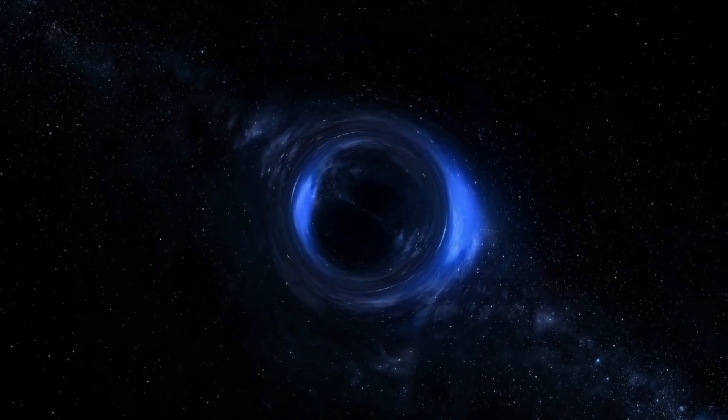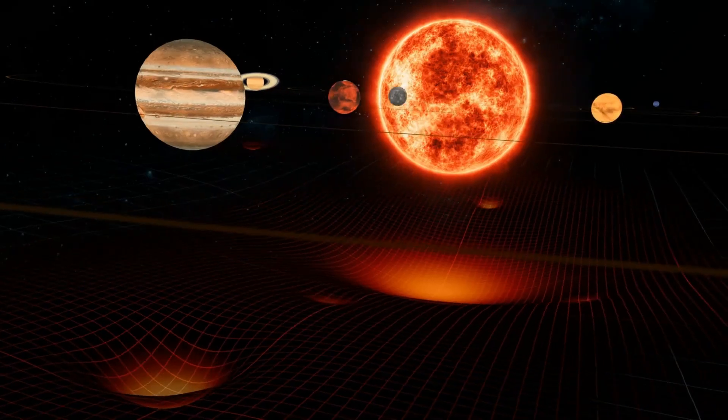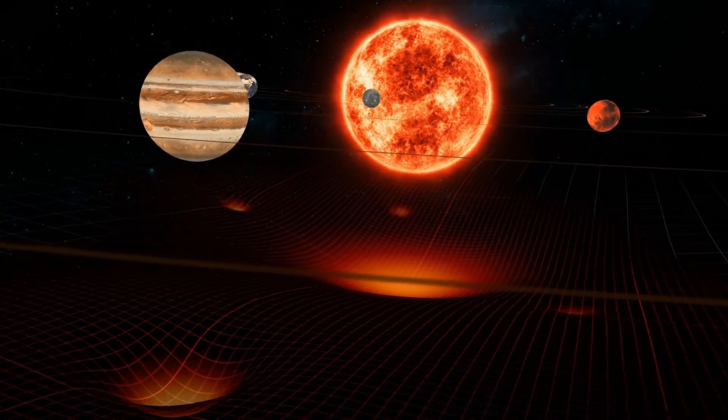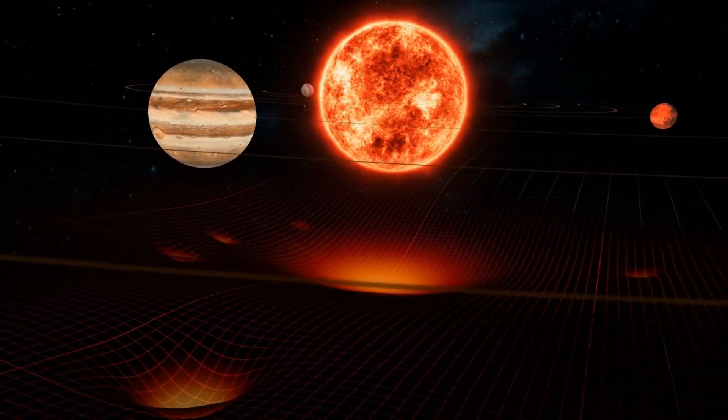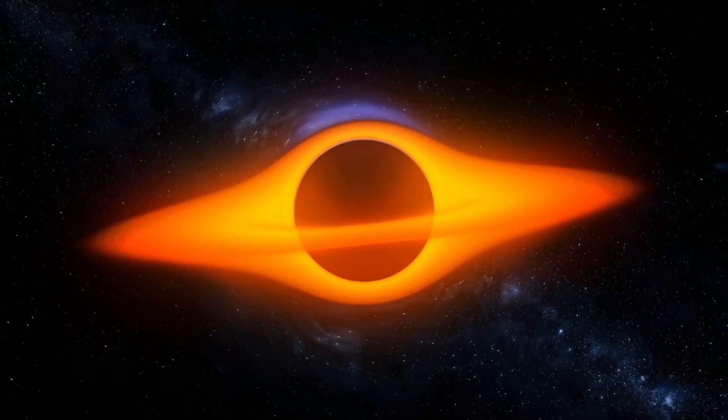The primary reason for considering a primordial black hole instead of a planet is the gravitational evidence. The perturbations in the orbits of the objects in the Kuiper Belt cannot be easily explained by known planets alone. A small but massive object like a primordial black hole could cause the same gravitational effects without being visible in current optical telescopes.